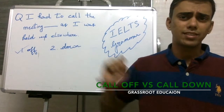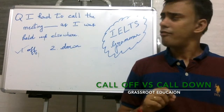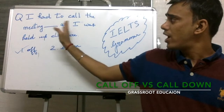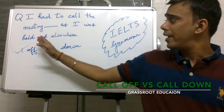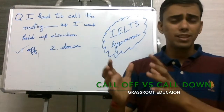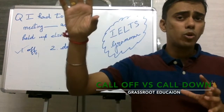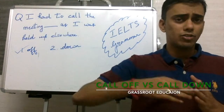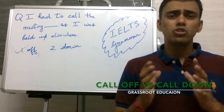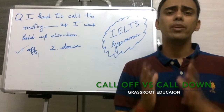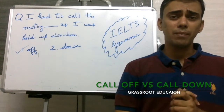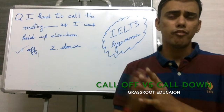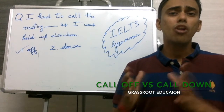Now in this particular sentence it says: 'I had to call the meeting ___ as I was held up somewhere,' which means I was held up elsewhere. So what do I have to do about the meeting? I'll have to cancel it because I cannot attend it. So if you want to convey that you want to cancel something, the phrasal verb you use is 'call off.'